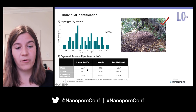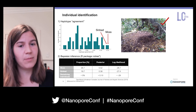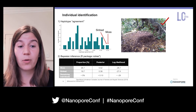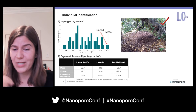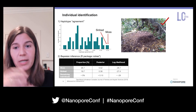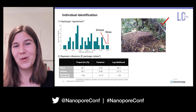Sinbad, another kakapo, comes up as the second hit — confirmed in both the haplotype agreement plot and the Bayesian inference approach. This made me guess that Sinbad had probably been some sort of contamination, as his territory is not close to Moss's. When I checked back with the kakapo recovery team, it turned out that shortly before our soil sampling, Sinbad had been called a lot for artificial insemination — so there may have been contamination through the human activity connecting all sites on the island.